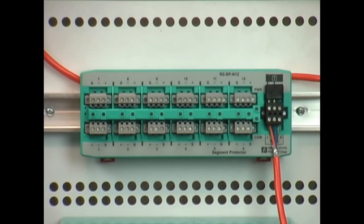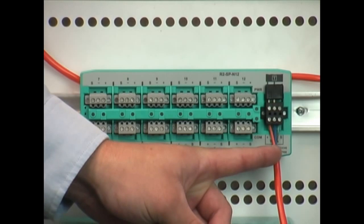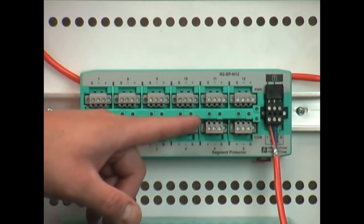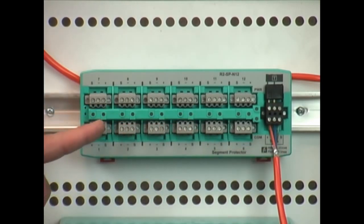The next component for a Foundation Fieldbus segment is going to be some sort of field distribution and for Pepperl and Fuchs we call that a segment protector. This is what takes a trunk in connection from your power supplies and converts that into different spur connections for your individual field devices.